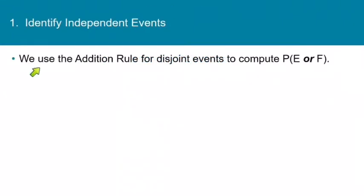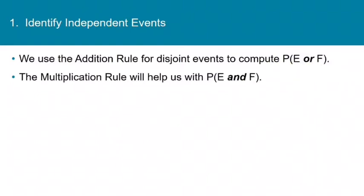You'll remember from Section 5.2 that we had the addition rule for disjoint events to help us compute the probability of E or F. Now the multiplication rule is going to help us calculate the probability of E and F. Just as the addition rule required E and F to be disjoint, the multiplication rule requires E and F to be independent. So let me give you a definition for independence.